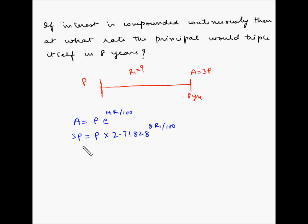Here P gets cancelled with P, so 3 is equal to 2.71828 to the power of, now 8 divided by 100 is 0.08 times R1. Now we can use logs here, so log 3 is equal to 0.08 R1 log 2.71828.